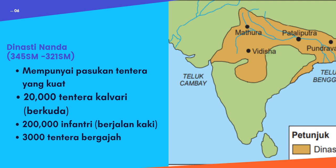Dia juga ada 200,000 tentera infanteri - tentera yang berjalan kaki yang beramai-ramai. Ni kenapa dia nakkan banyak sumber manusia - salah satunya untuk jadikan tentera, untuk kuatkan kerajaan masing-masing. Dan juga ada 3,000 tentera bergajah. Hebatnya Dinasti Nanda - memang patut dia boleh menguasai kawasan-kawasan tu. Tengok sahaja tentera dia, dia pun dah hebat.